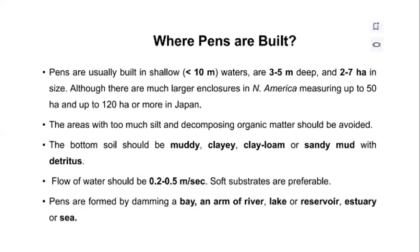Pens are usually built in shallow water where the depth should be three to five meters. The area where you want to construct the pen should be two to seven hectares in size, although there are much larger enclosures in North America reaching about 50 hectares, and up to 120 hectares in Japan. Areas with too much silt and decomposing organic matter should be avoided. The bottom soil should be muddy clay and sandy mud with detritus. Water flow should be 0.2 to 0.5 meters per second, and soft substrates are preferable. Pens are formed by damming a bay, arm of a river, lake, reservoir, or estuary.